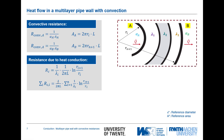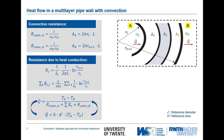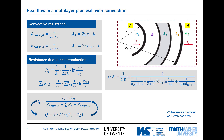On one side we have the convective resistance, on the other the resistance due to heat conduction. To calculate the heat flux between the inner side at temperature T_A and outer side at temperature T_B, we account for all resistances — the convective resistance twice and n times the layer resistances. We can reformulate this with a total heat transfer coefficient k, multiplied by a reference area and the driving temperature potential. The reference area has an important implication I will return to.